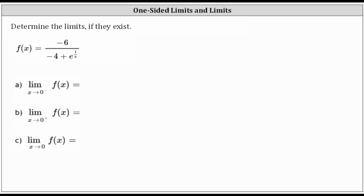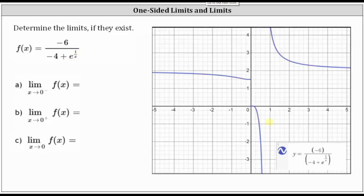We're asked to determine the limits if they exist. We'll determine the limits using a graphical approach as well as using a table of values. Let's begin by graphing the function f of x equals negative six divided by the quantity negative four plus e raised to the power of one divided by x. I've made this graph using desmos.com.